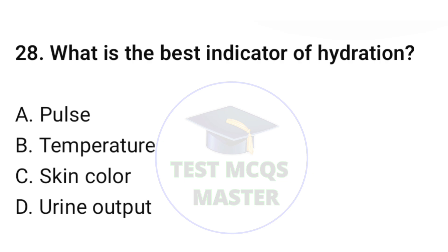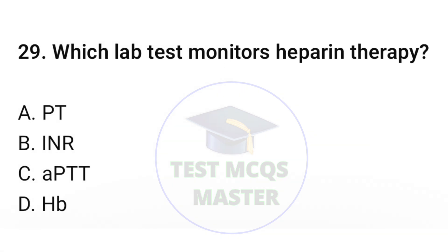Question number twenty-seven: What is the best indicator of hydration? The correct option is D: urine output. Question number twenty-eight: Which lab test monitors heparin therapy? The correct option is C: PTT.